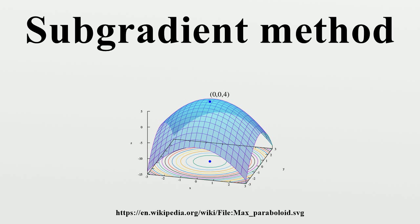If the current point is feasible, the algorithm uses an objective subgradient. If the current point is infeasible, the algorithm chooses a subgradient of any violated constraint.